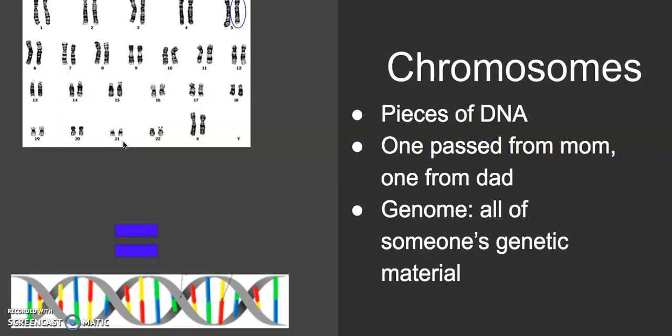A genome is all of someone's genetic material — all of these chromosomes together. All of these chromosomes are in every single one of our cells. If we take this together, it makes up a genome, which is the entirety of somebody's genetic material. We think about this in the context of genomics — when sequencing someone's genome, you are taking note of all the A's, G's, T's, and C's that make up their entire genome, which is a really massive feat.